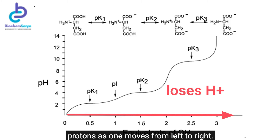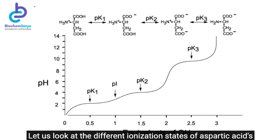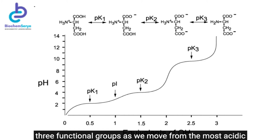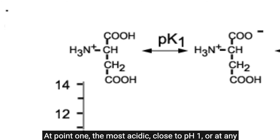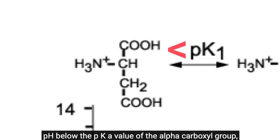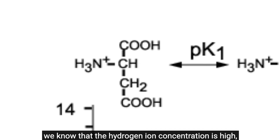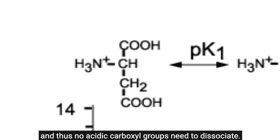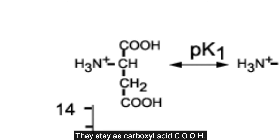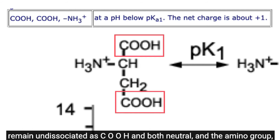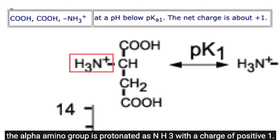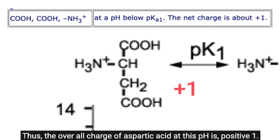Aspartic acid loses protons as one moves from left to right. At the most acidic end near pH 1, or below the pKa of the alpha-carboxyl group, the hydrogen ion concentration is high and no acidic carboxyl groups need to dissociate. Both alpha- and beta-carboxyl groups remain undissociated as COOH and neutral, while the alpha-amino group is protonated as NH3-positive with a charge of +1. The overall charge of aspartic acid at this pH is +1.